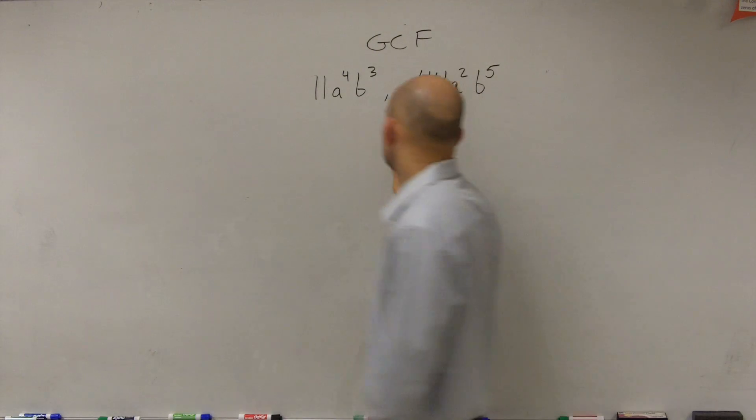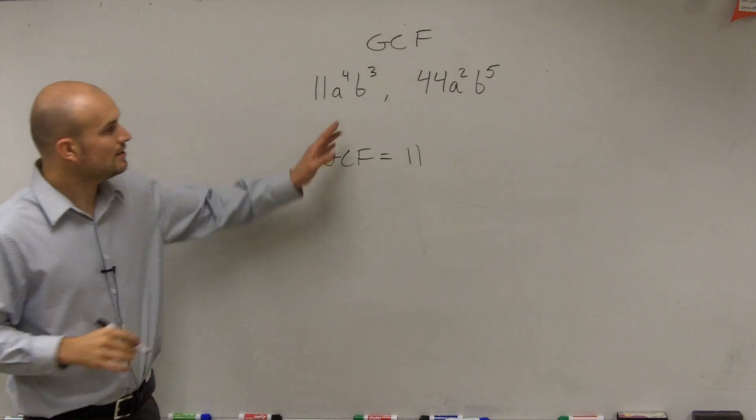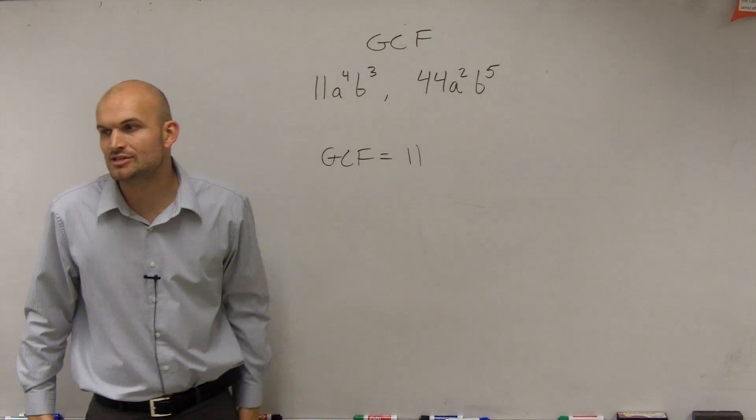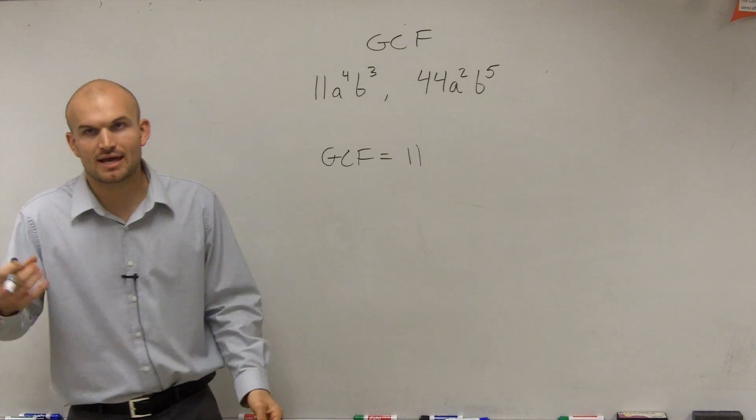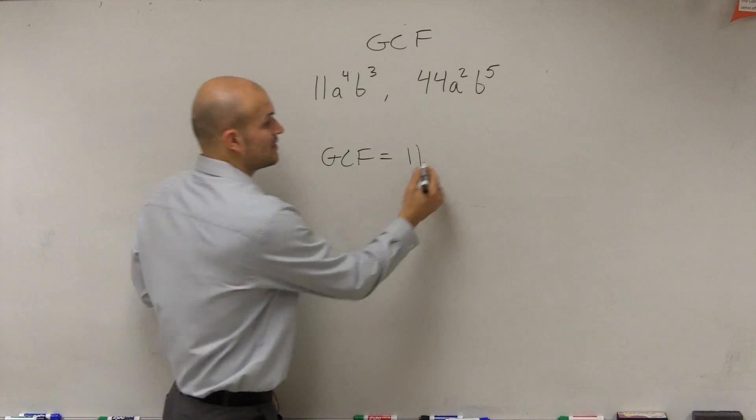11, right? So you could say your GCF equals 11. And then what about the a's? Look at the two a terms. What is the a to the what exponent? What is the a to the what exponent divides both into a squared and a to the fourth? a squared. Very good.